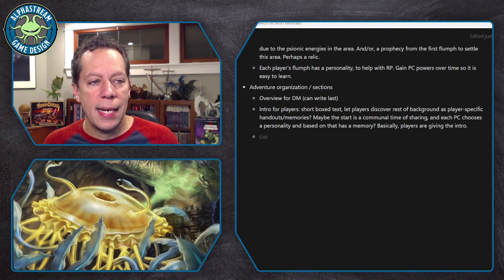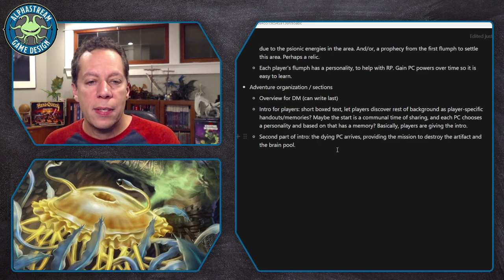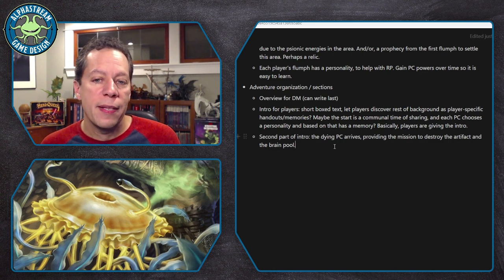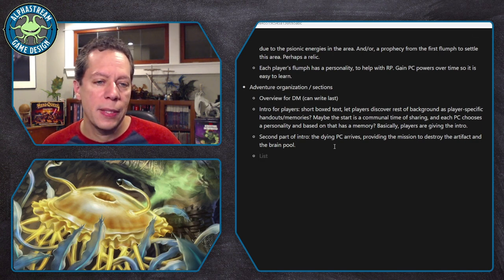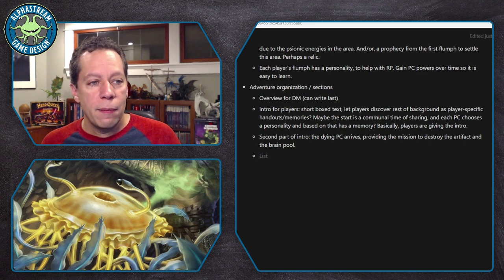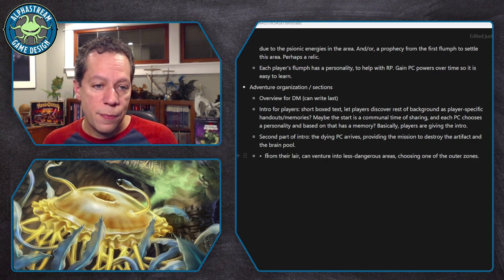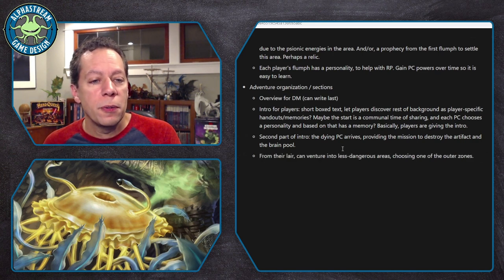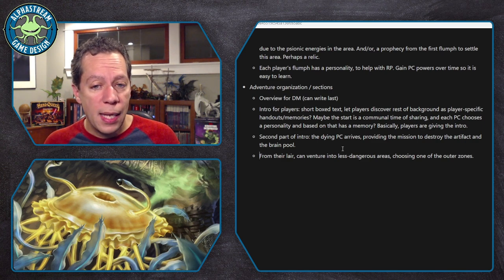Based on that idea — maybe it's the players who are setting up the introduction — then I can go into my second part of the introduction, which is that the dying character will arrive and provide the mission: to destroy whatever the psionic artifact is or stop whatever ritual is taking place involving the brain pool. I feel really good about that. Now the presumption is you're going to be in a sort of safe zone. The next step is to venture into whatever the next area is — a less dangerous area. We talked about zones last time, so choosing one of these outer zones where they want to go.